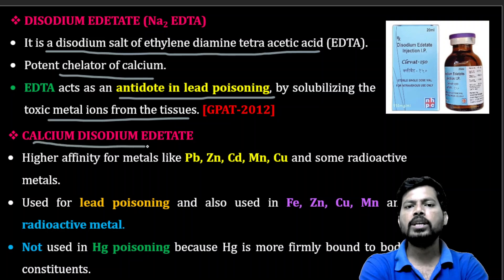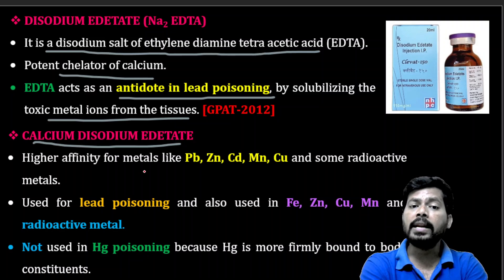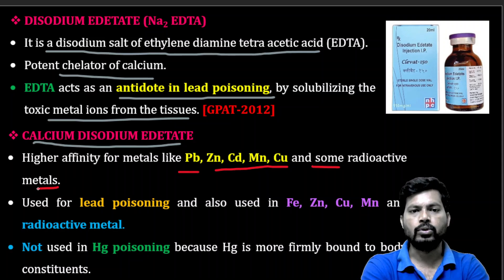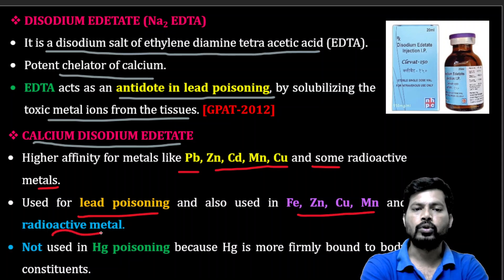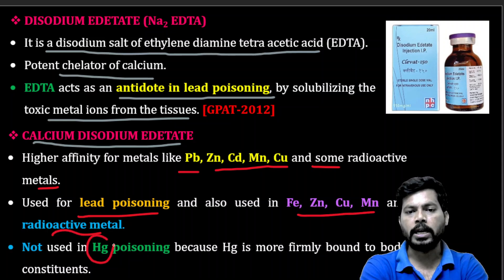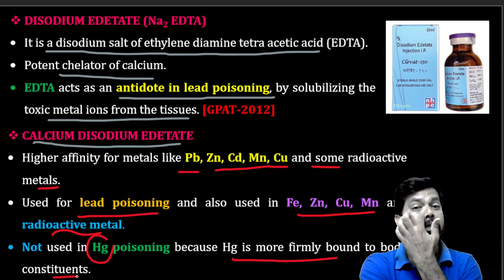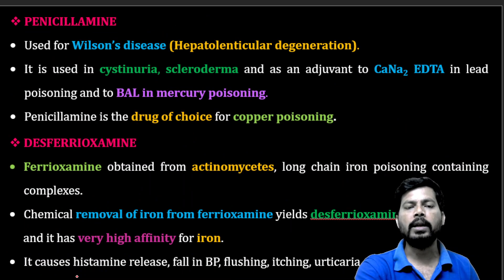Calcium disodium EDTA has a higher affinity for metals like lead, zinc, cadmium, manganese, copper, and some radioactive metals. It is used for lead poisoning and also in iron, zinc, copper, manganese, and radioactive metal poisoning. It is not used in mercury poisoning because mercury is more firmly bound to body tissues.